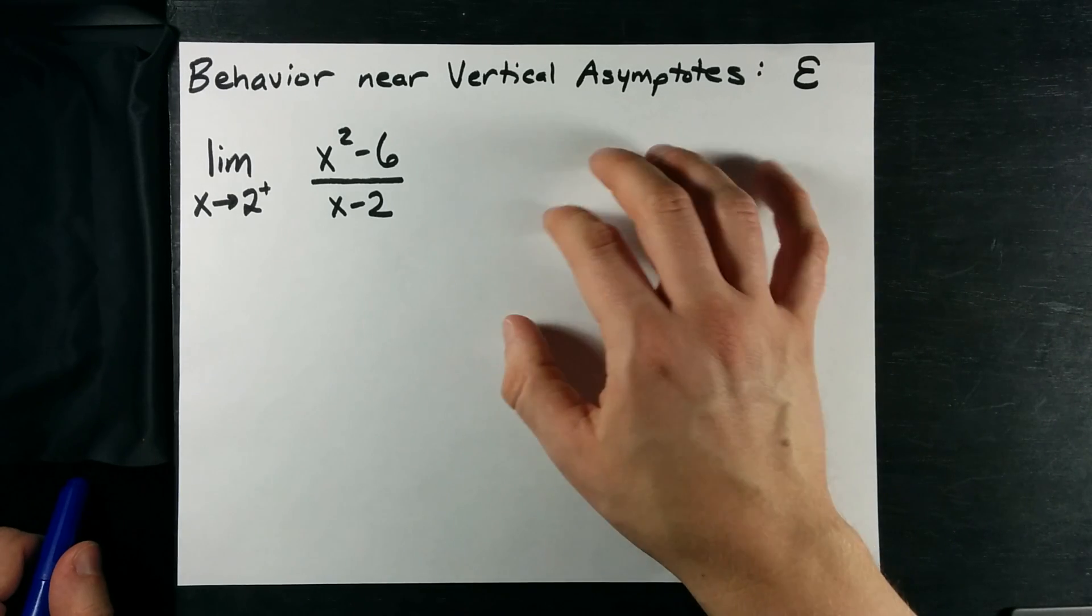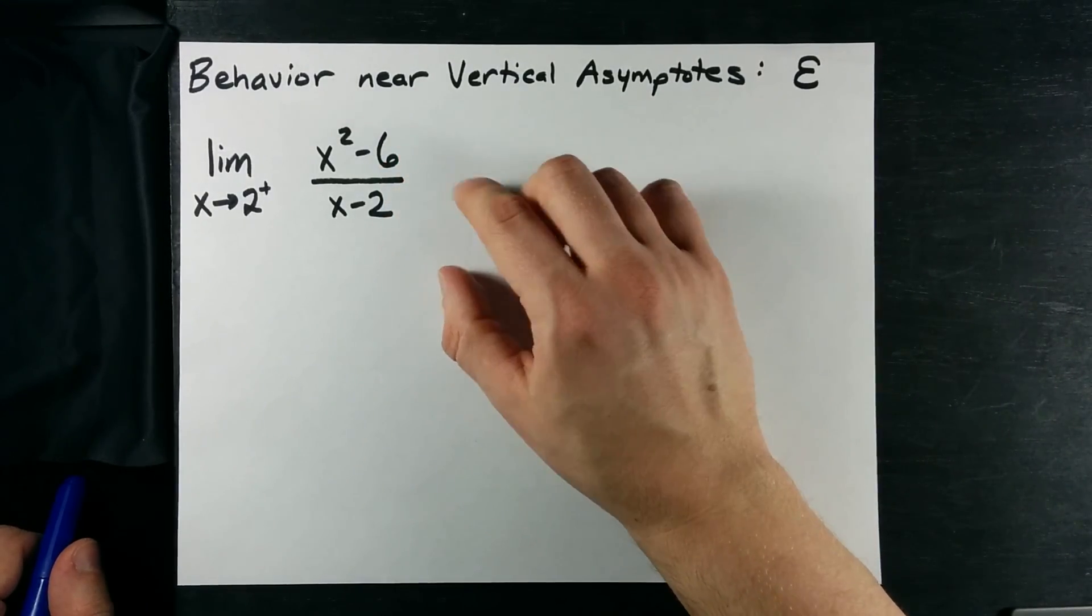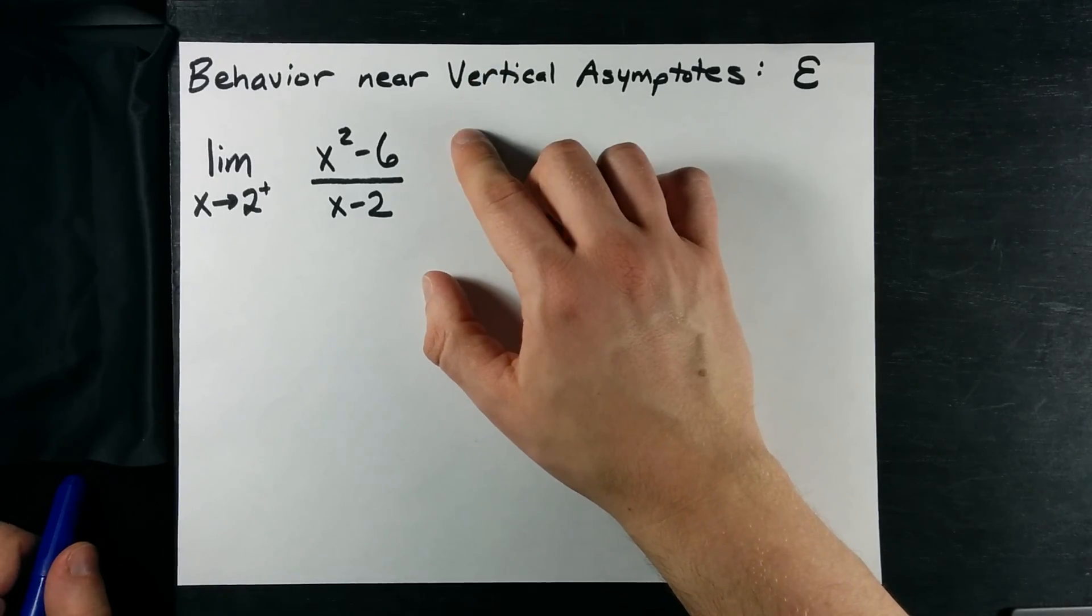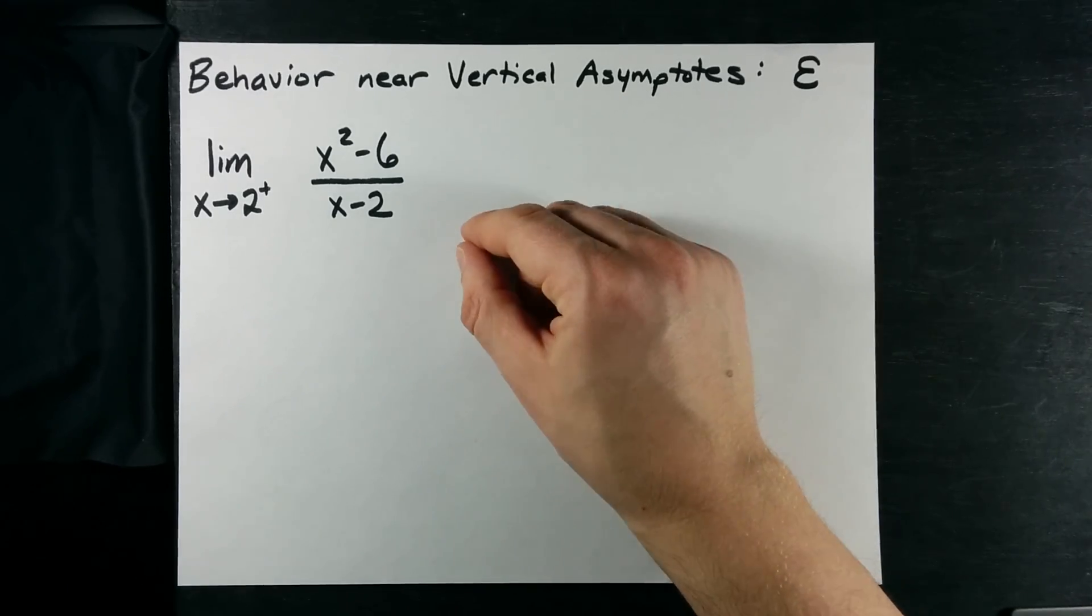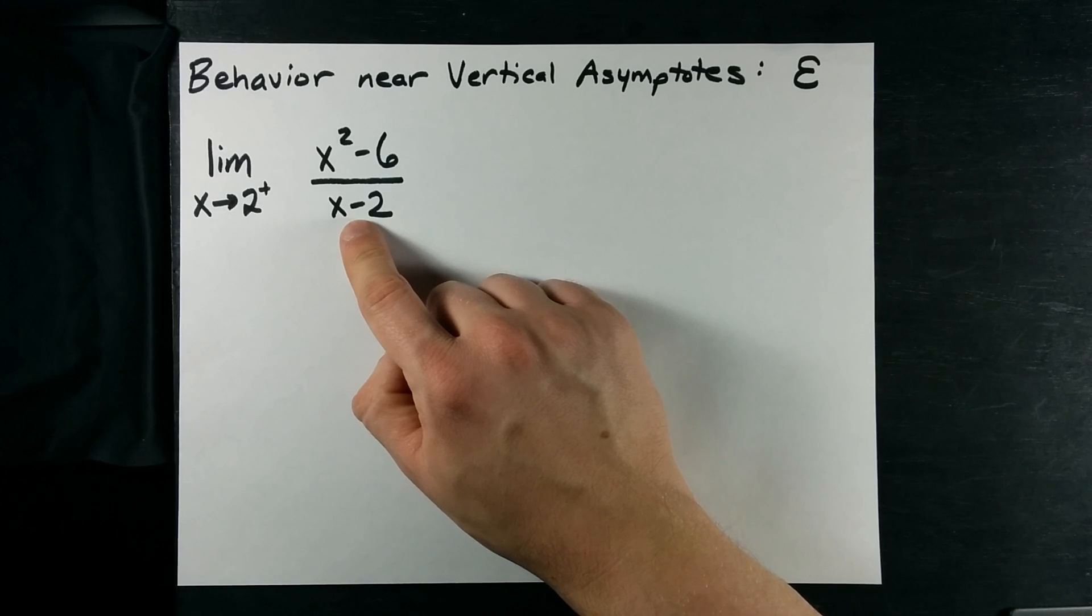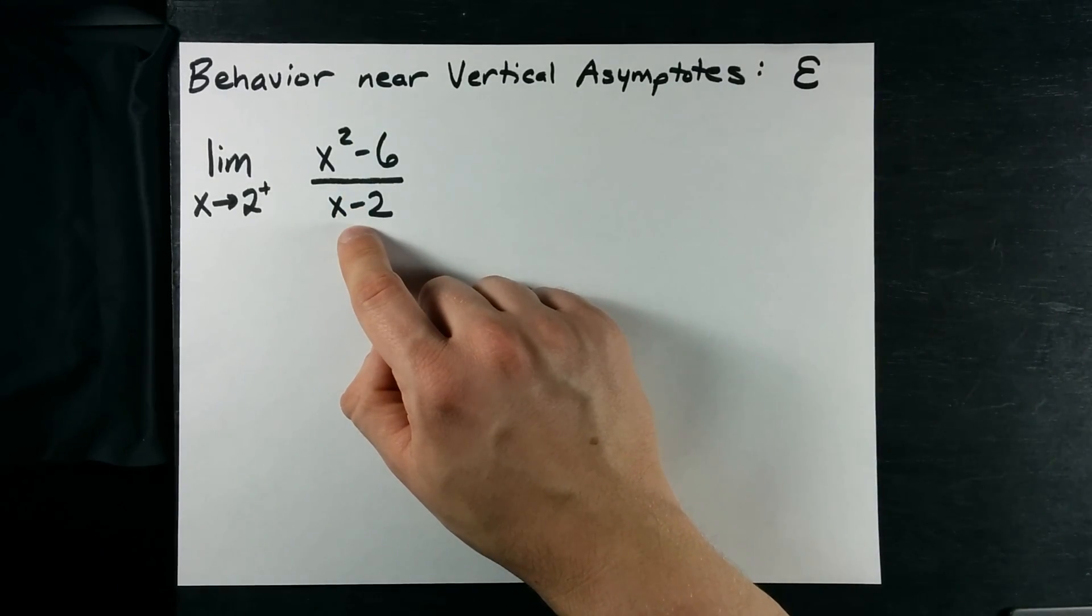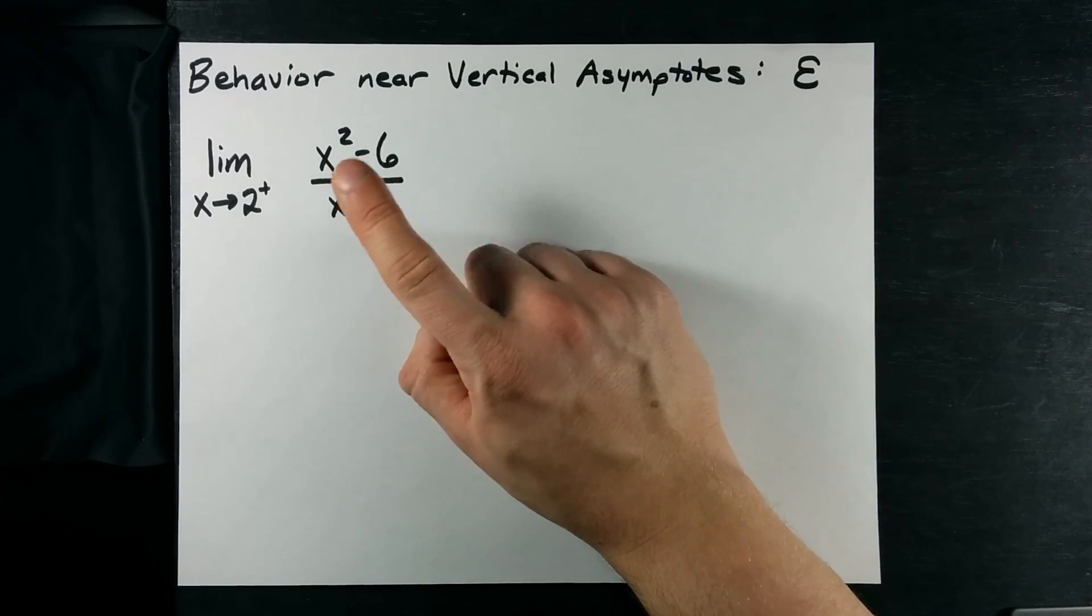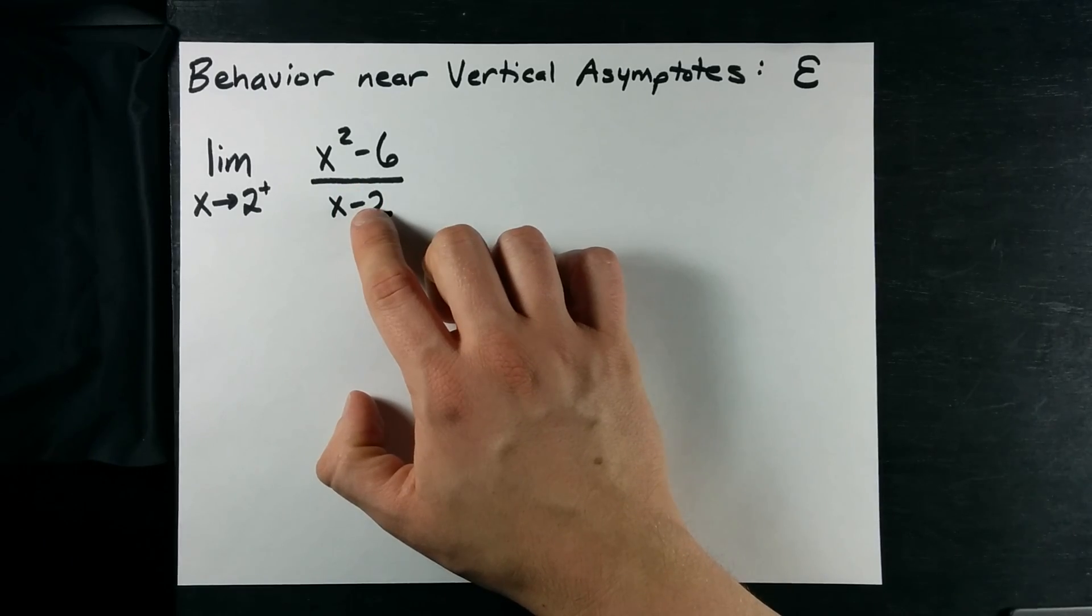It's a hole if when you factor the top and bottom, the term cancels out. An x plus 1 on top and an x plus 1 on bottom will cancel each other out, and you'll end up with a hole at negative 1. If a term doesn't cancel out, and this doesn't factor to anything nicely with x minus 2, it will be a vertical asymptote. I have a vertical asymptote at positive 2 here.